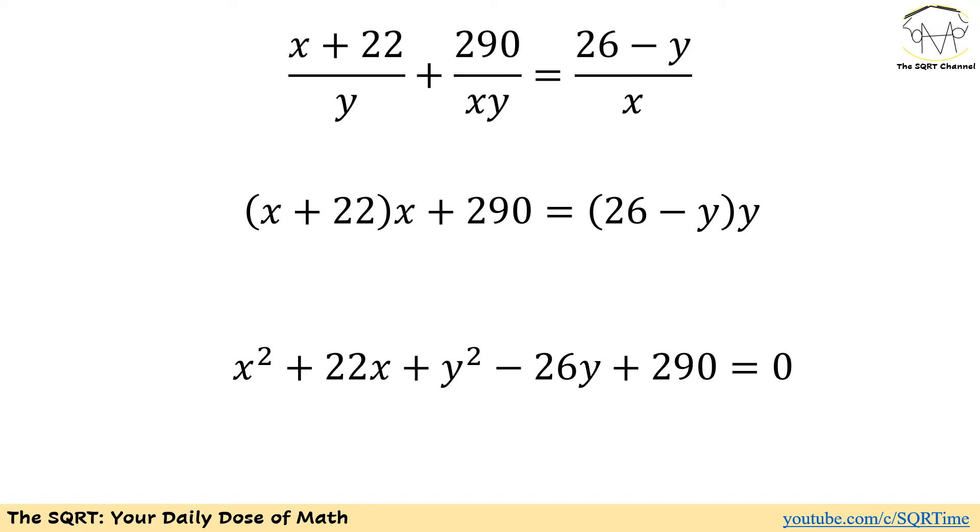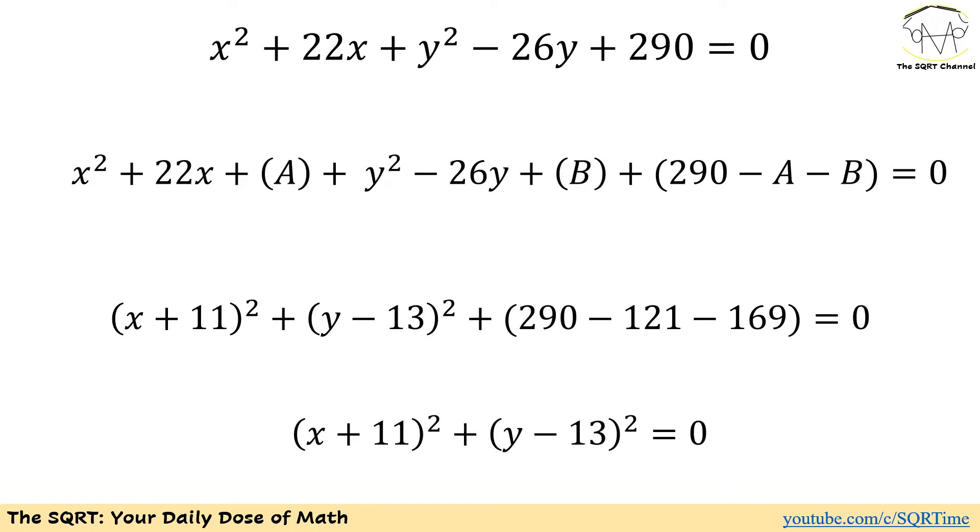So for the first term we are going to have x² + 22x, and then we are going to have y² - 26y, and then we have 290. If we arrange everything you are going to see the equation that we have here.